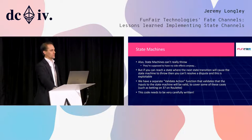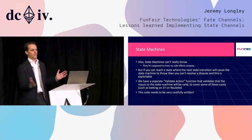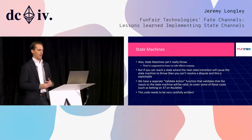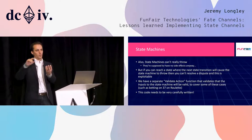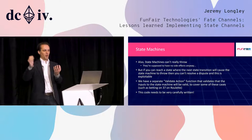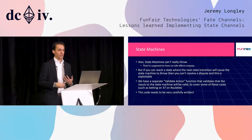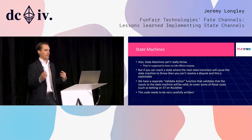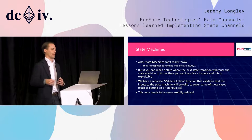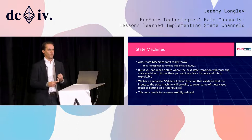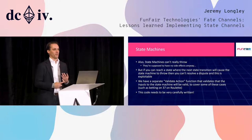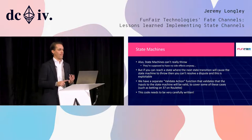State machines can't really throw — they're not supposed to have side effects, so there's nothing to undo, but they have to always work. If you can reach a position where a state machine is in a given state and the next state transition causes an overflow, throw, or exception that makes the transaction fail, you cannot resolve that dispute. This is actually exploitable. We have various validate calls to ensure you can't bet on 37 on roulette or minus one, which could cause problems. This code has a whole new set of vulnerabilities, different to other Solidity vulnerabilities, and you need to think about it very carefully.